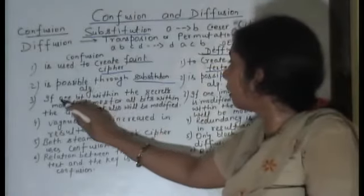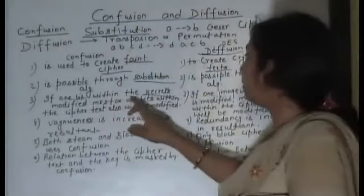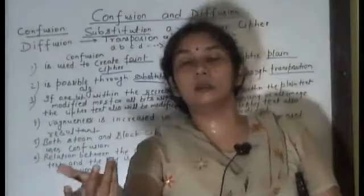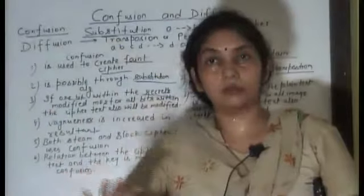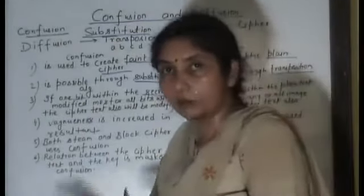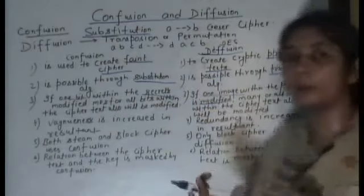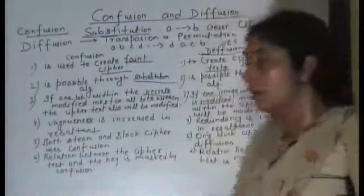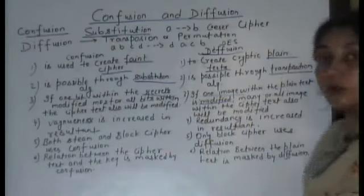What do you do in substitution? You have to modify one bit within the plaintext. That is why one bit within the plaintext is modified, and most or all of the bits within the ciphertext will also be modified. If you replace one character with another character, in the same way, if you replace one A, you have to replace all A's. When you change the position in permutation, you replace different positions.